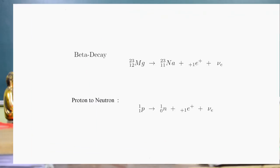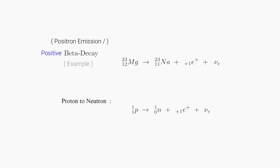There is another kind of beta decay called positive beta decay, or positron emission, which is the opposite transformation: a proton converts to a neutron. A nucleus with an excess number of protons converts to a new nucleus with fewer protons. The proton converts to a neutron, emitting a positron — the antimatter version of the electron — along with a neutrino.